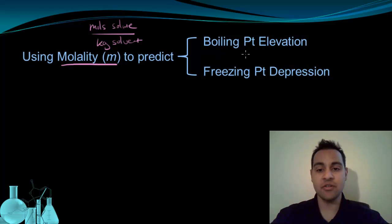For boiling point elevation, we get the equation ΔTb equals Kb with this lowercase m for molality. The equation for freezing point depression is going to look very similar. And we have ΔTf equals Kf, and again the lowercase m for molality.